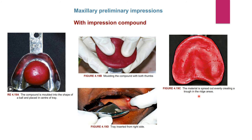For insertion of the maxillary tray, it is held in the operator's right hand pointing toward the patient's right. The operator uses the index and middle fingers of the left hand to retract the upper lip, and the tray is rotated into the mouth from the right side (opposite to mandibular impressions, where it is inserted from the left side). The labial frenum is used as a guide to center the tray. The patient is instructed to slightly close the mouth while the upper lip is lifted upwards and forwards, seating the tray anteriorly first, then posteriorly until the impression contacts the ridge.